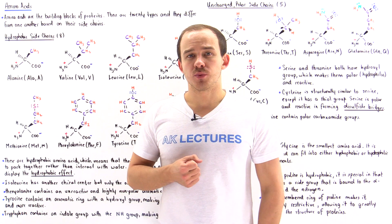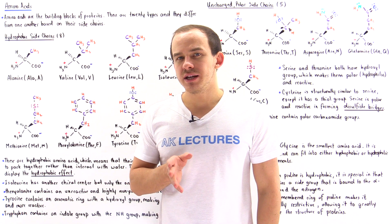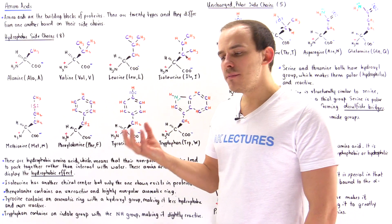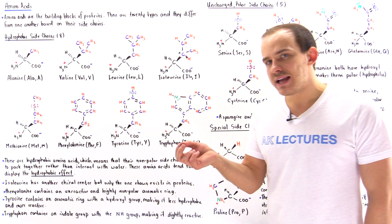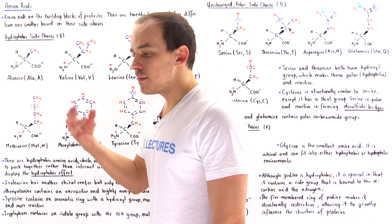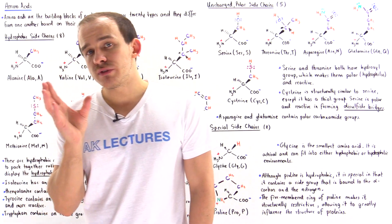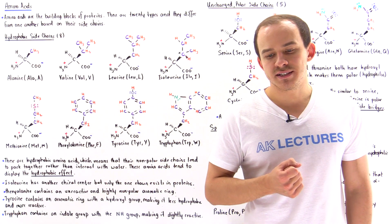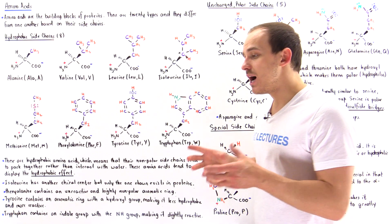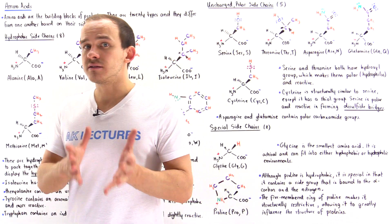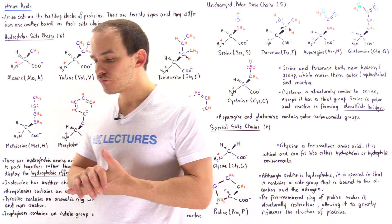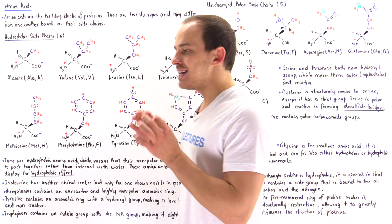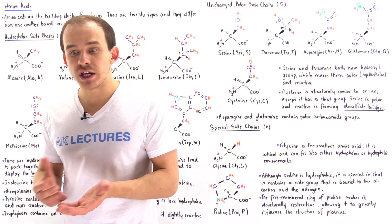Amino acids are the building blocks of proteins, and inside our body we have 20 different types of amino acids. What distinguishes one amino acid from another is the side chain group — it not only differentiates amino acids from each other but also gives each amino acid its properties and chemical reactivity. In this lecture we're going to focus on 15 of these amino acids, categorized based on their hydrophobic and hydrophilic properties based on their side chain groups.